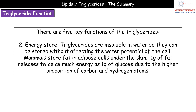The second key function is as an energy store - not to be mixed up with energy source. Energy source generates ATP; energy stores are ways we can keep energy locked away within cells without affecting the water potential, because triglycerides are insoluble in water. In mammals we store fat in adipose cells just under the skin. Comparing gram for gram, fat to glucose, we're able to get twice as much energy from fat as from glucose, due to that much higher proportion of hydrogen atoms.